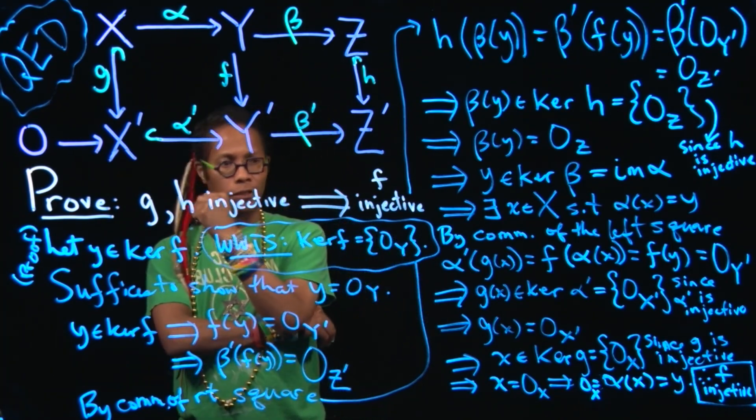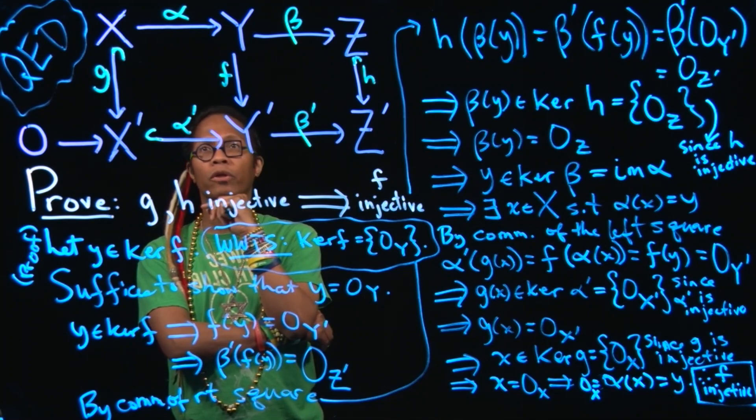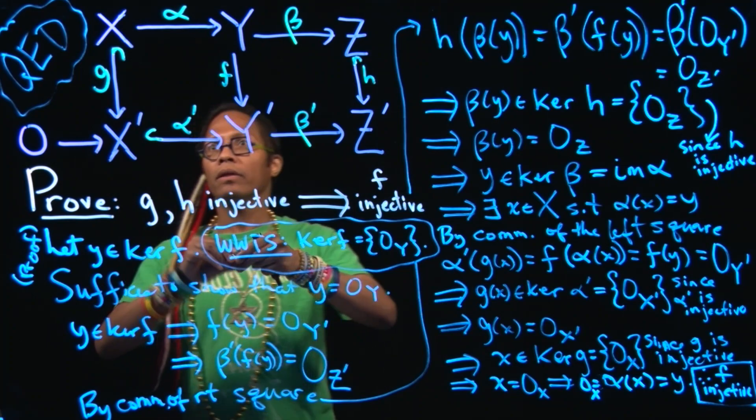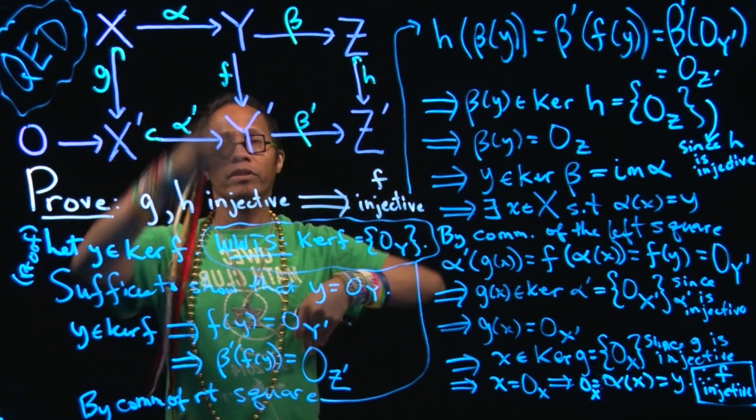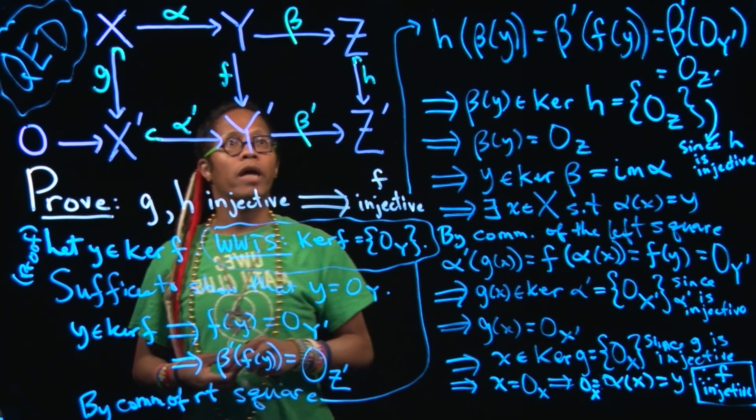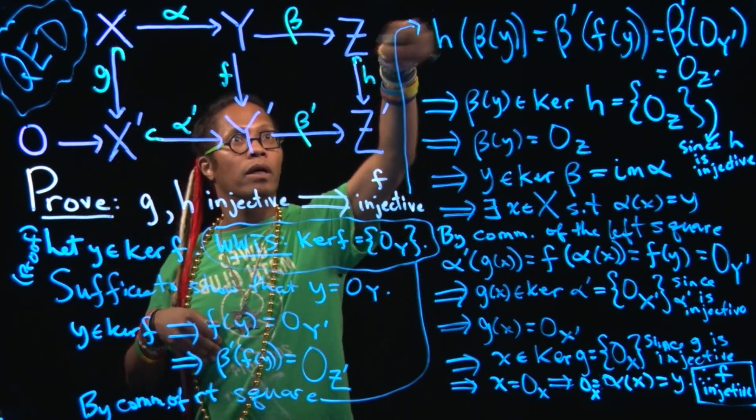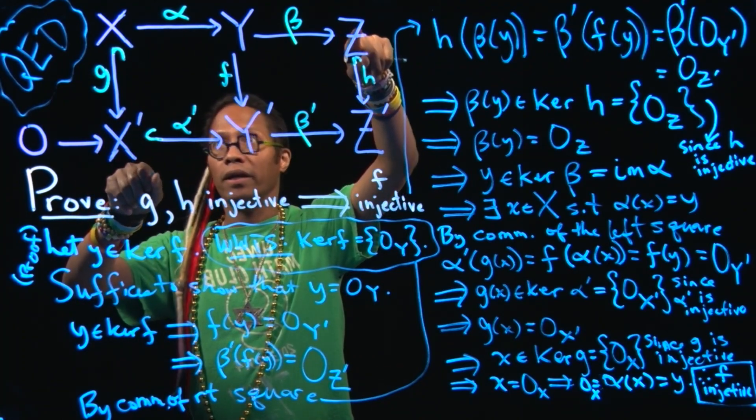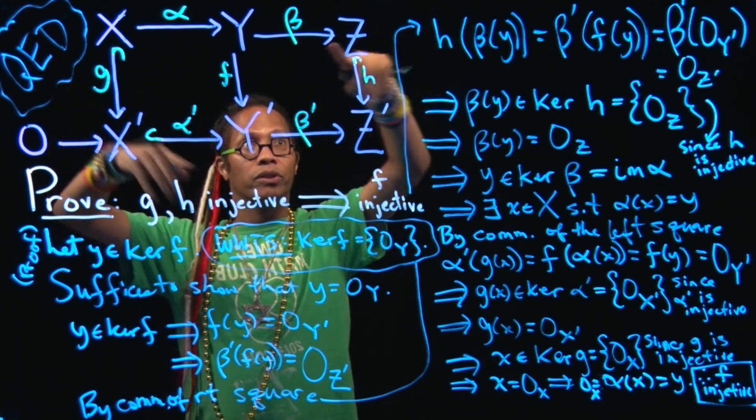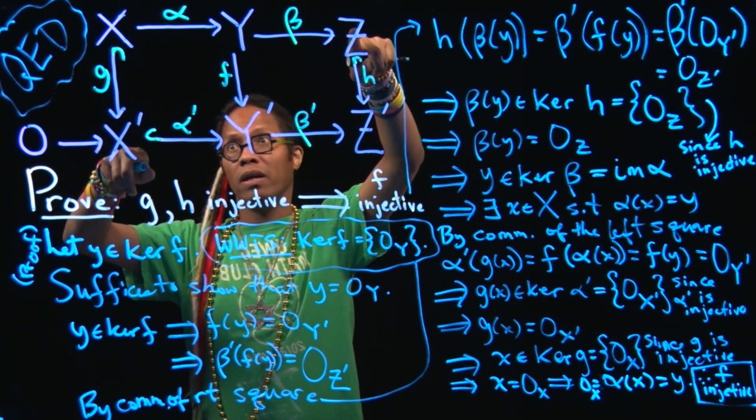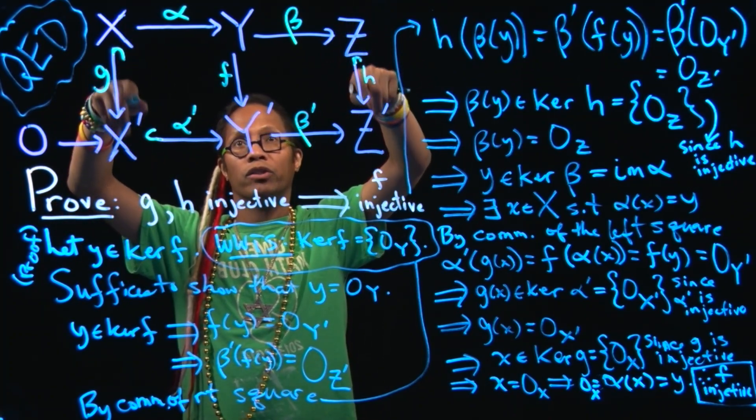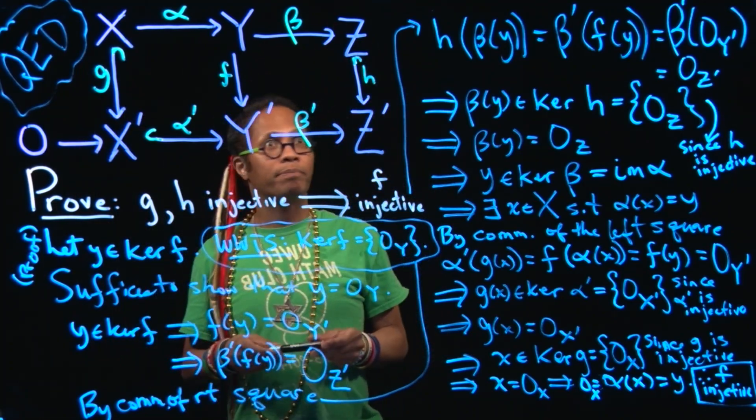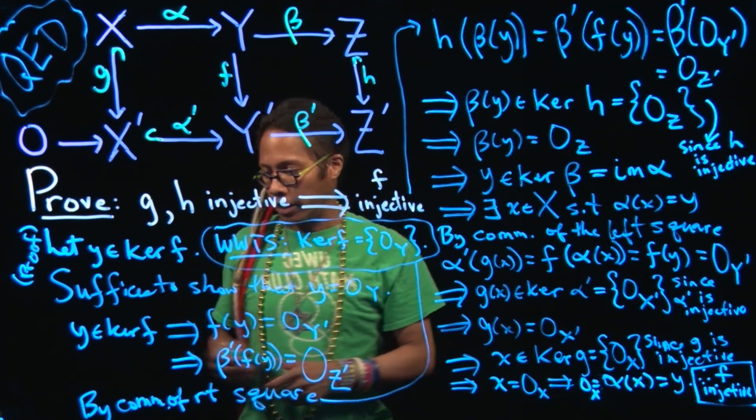Yeah, so this is half of the short five lemma. The next thing I'll do, well, after, well, if G is surjective and H is surjective, then F is surjective. If you put those two together, then you get if the outer rungs, oh, also we need exactness at Z to do that. And we do not need exactness at X prime to do that. And then if we have exactness at Z and exactness at X prime, then we know that if G and H are isomorphisms, then that'll imply that F is an isomorphism. And that is essentially the short five lemma. Fun. Talk to you later.